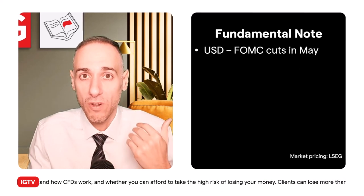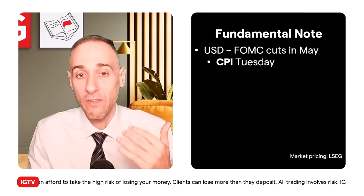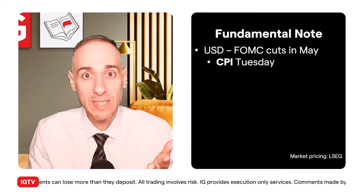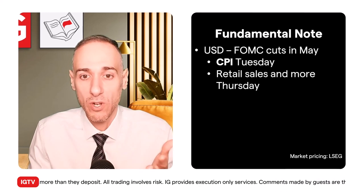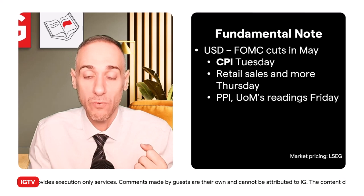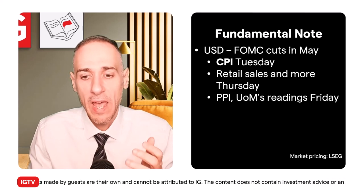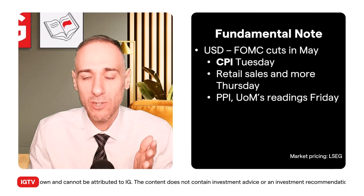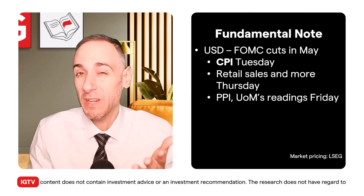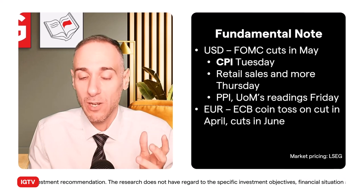What about from a fundamental point of view? Those of you putting in levels for Tuesday, beware — CPI releases then, and it's a significant one. You've got retail sales and more on Thursday. You've got producer prices and the University of Michigan's preliminary read for consumer sentiment and inflation expectations on Friday. Fed market pricing is still showing a cut in May, but these figures — especially CPI on Tuesday — could result in a change in that narrative, at least a little bit.